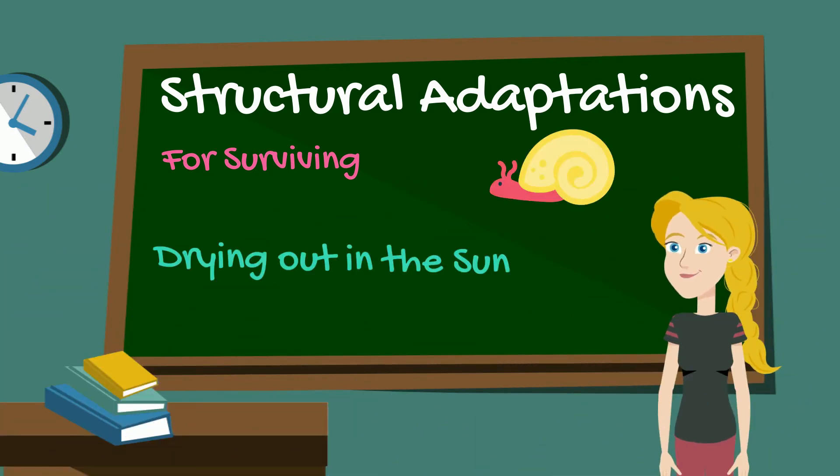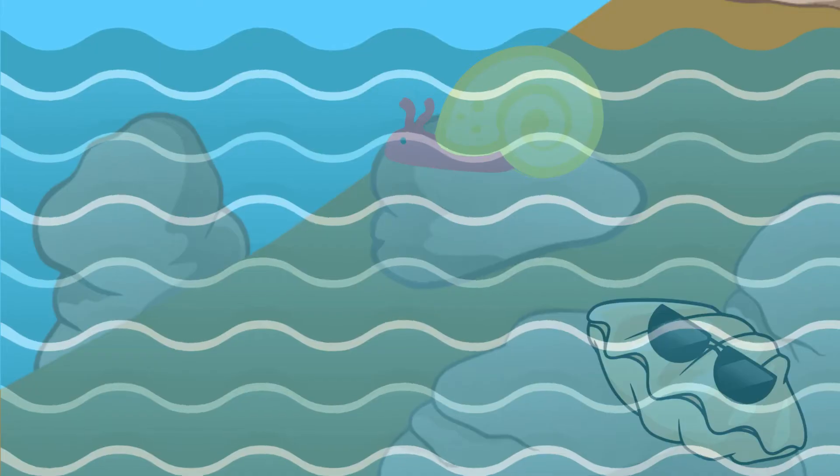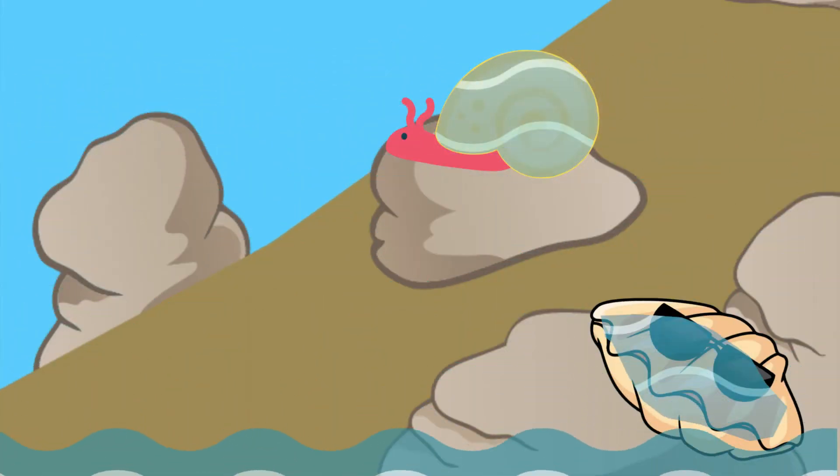Snails and other mollusks have waterproof shells that help them hold in water. This water storage helps keep them wet even when they are not immersed in water. When they are closed, they are able to hold water inside of their shells.